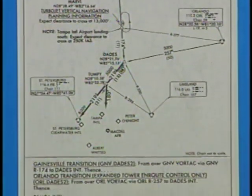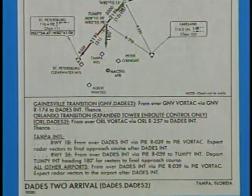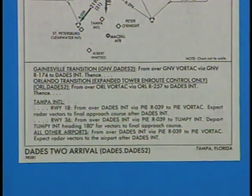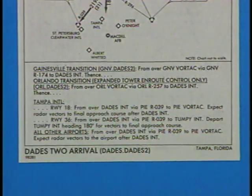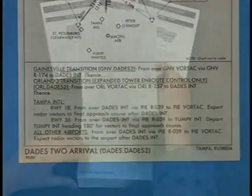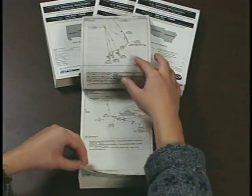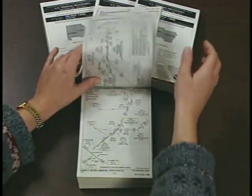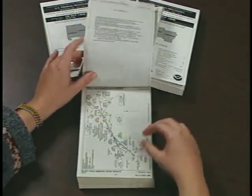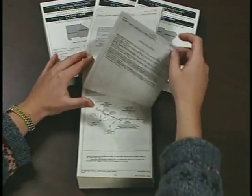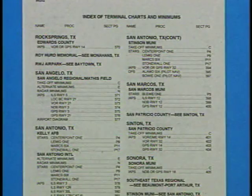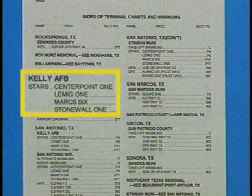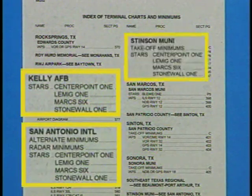STARs normally contain both a graphic depiction of the procedure that follows normal conventions for terminal charts, and a textual description of all transitions, plus the arrival route. STARs are published in the corresponding terminal procedures booklet, but unlike DPs, they are filed alphabetically by procedure name near the front of each booklet. You can use the index for determining what STARs are available for a particular city or airport.